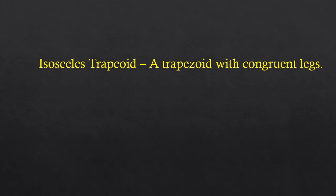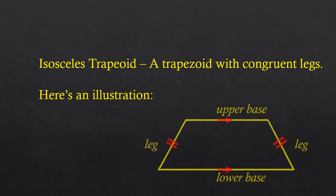Another definition: an isosceles trapezoid is a trapezoid with congruent legs, just like an isosceles triangle is a triangle with two congruent sides. An isosceles trapezoid is a trapezoid with congruent legs. The upper and lower base are parallel to each other, but the legs are of the same length — in other words, they're congruent.